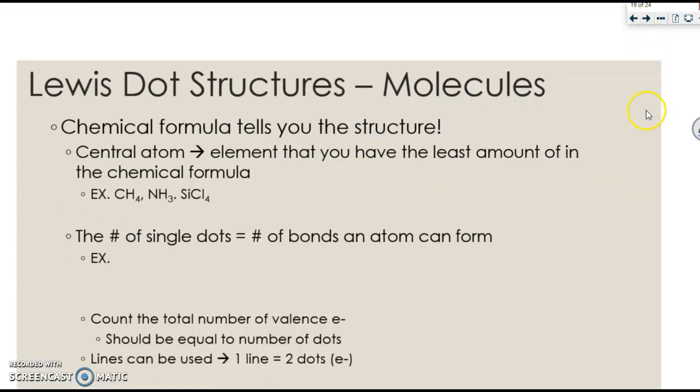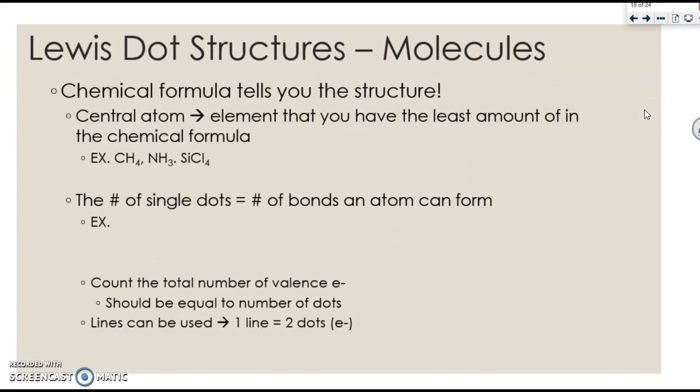So let's talk about how to draw all these dot structures for molecules. The chemical formula is going to tell you the structure. The central atom is the element that you have the least amount of in the chemical formula. It's usually also the one that's the least electronegative. So here, carbon is going to be in the center because there's one of them. Nitrogen will be in the center for this one because there's one of them, and Si would go in the center for that one because there's one of them.